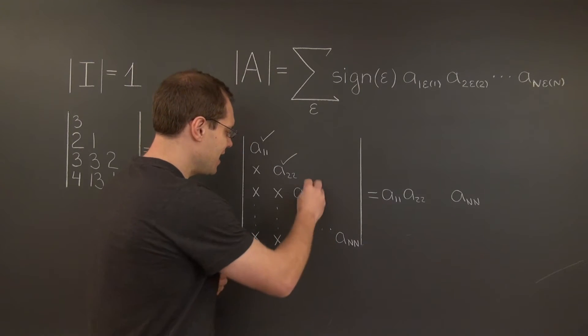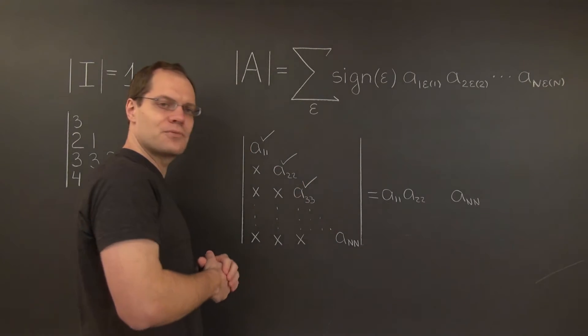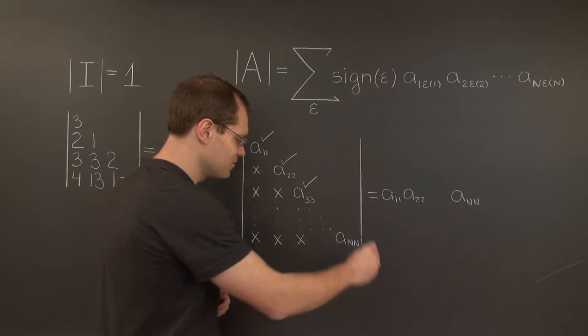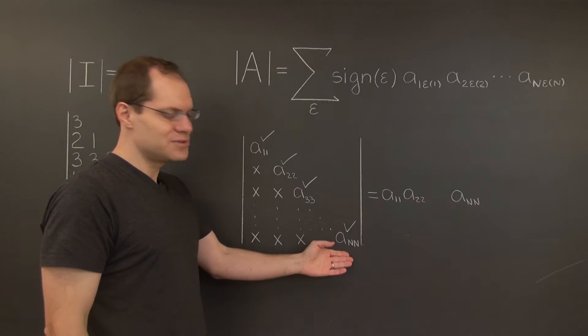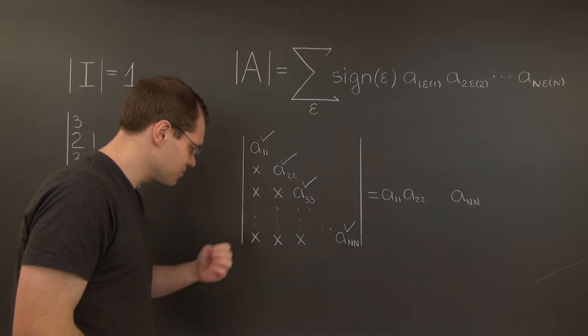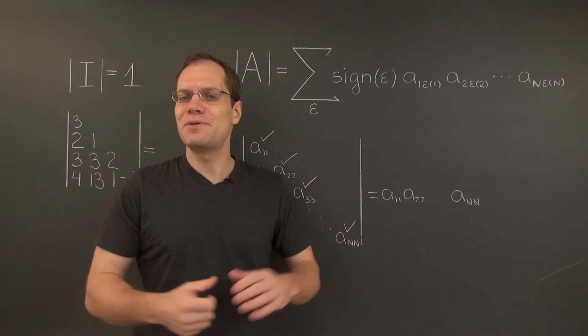And by the same token, a33 must be the entry from the third row, and so on, until you get to the last row, and you realize that you have to use the entry ann, because all of the other entries from the last row are already spoken for.